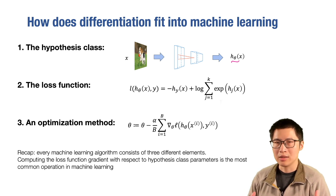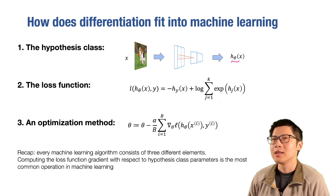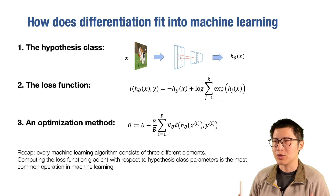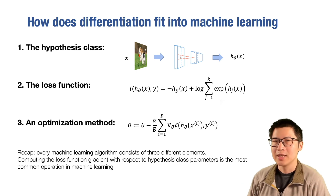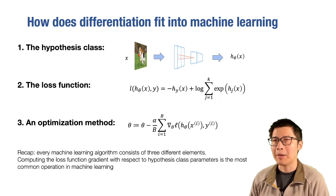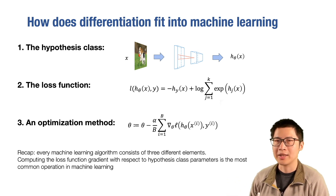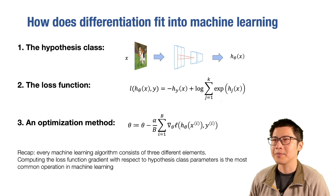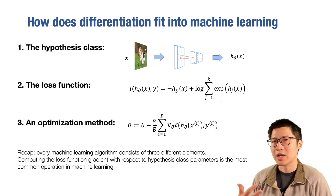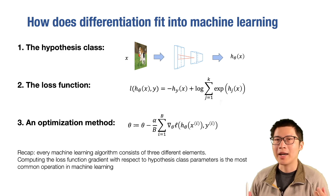The second element in machine learning is a loss function. The loss function defines, for a given hypothesis class and parameter theta, how good our prediction is — usually measured on a training dataset. We try to find a set of theta that minimizes the loss function on the training dataset, and then use that learned parameter theta to run predictions on future data. So the loss function is the element that measures how good we are.